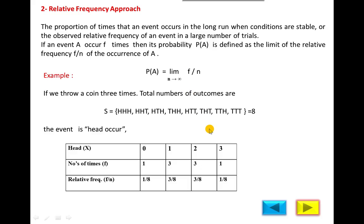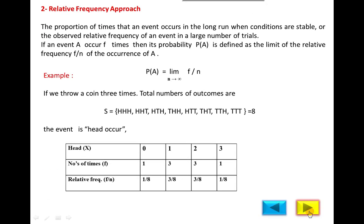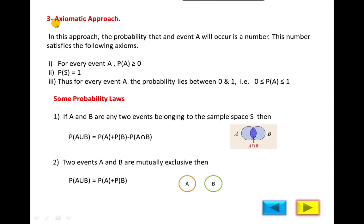The next approach is the axiomatic approach, which is a combination of the first and second approaches. In previous examples, the result of probability is a numerical value, and probability always lies between zero and one — it cannot be more than one or less than zero, and cannot be negative. So from the first and second approaches, we define the axiomatic approach based on assumptions called axioms.